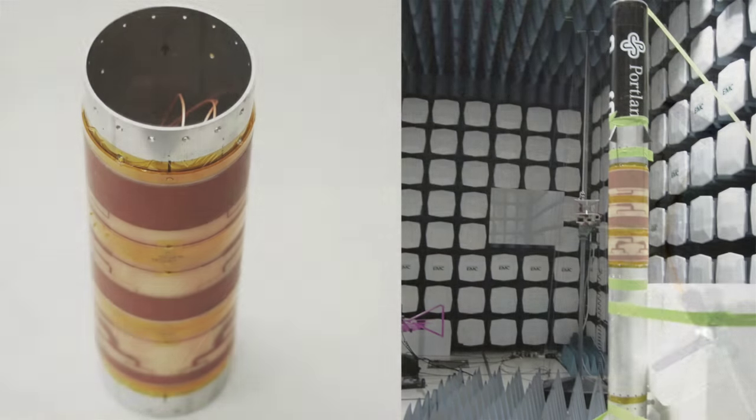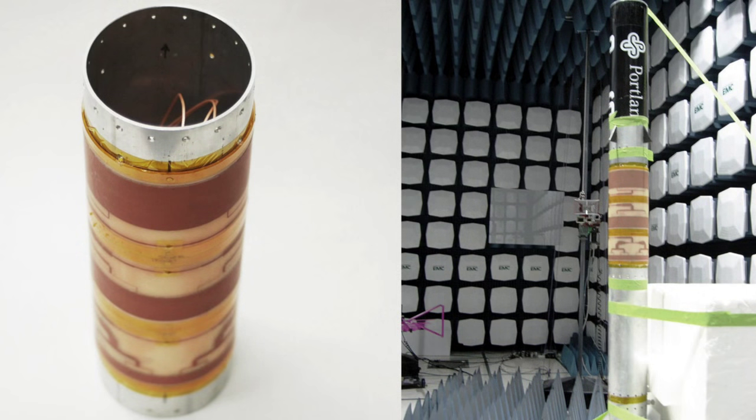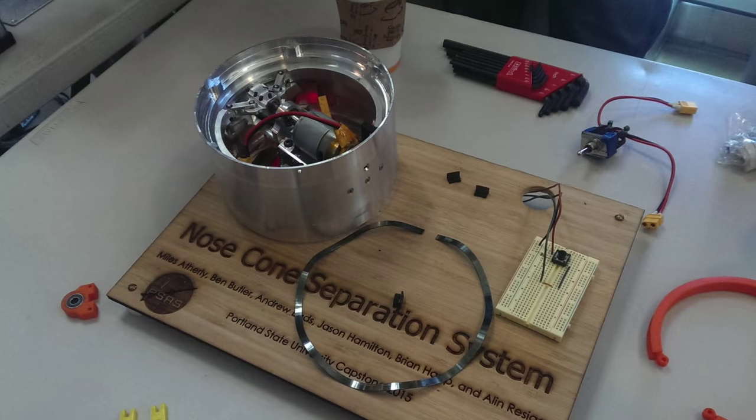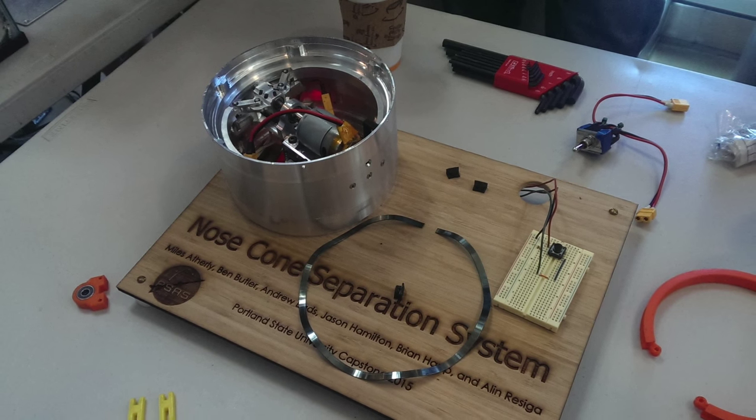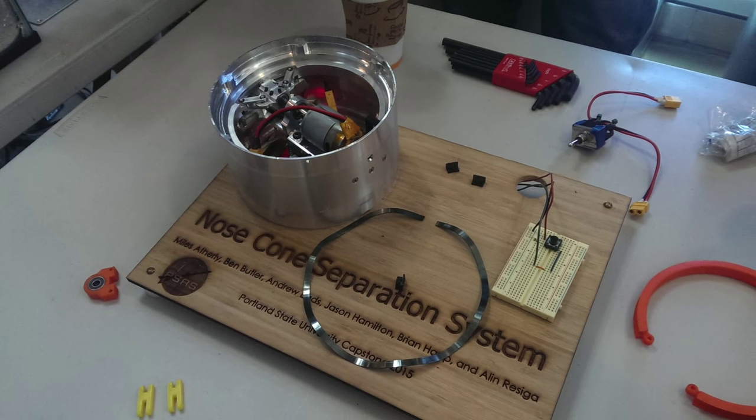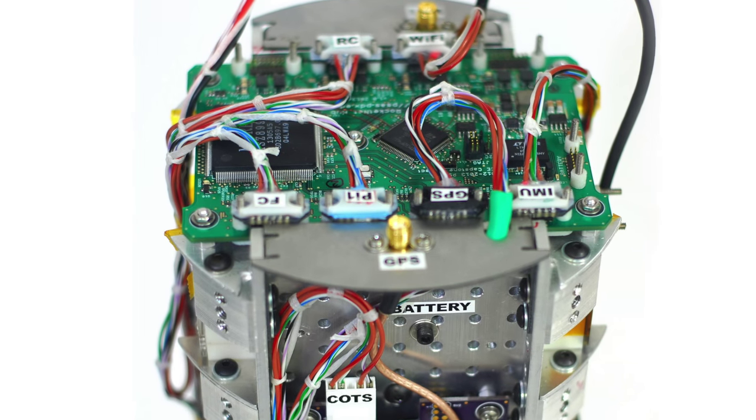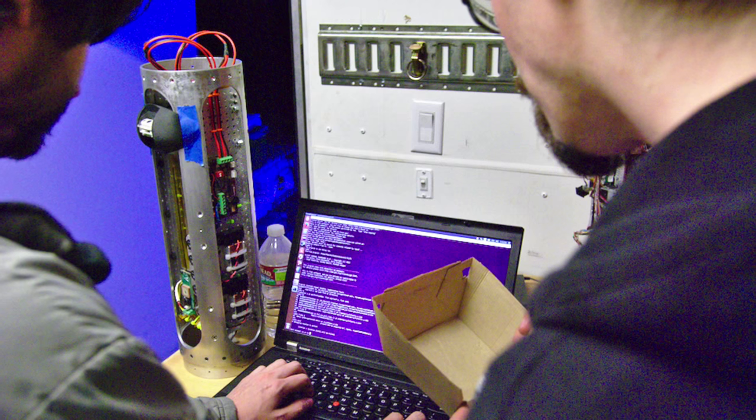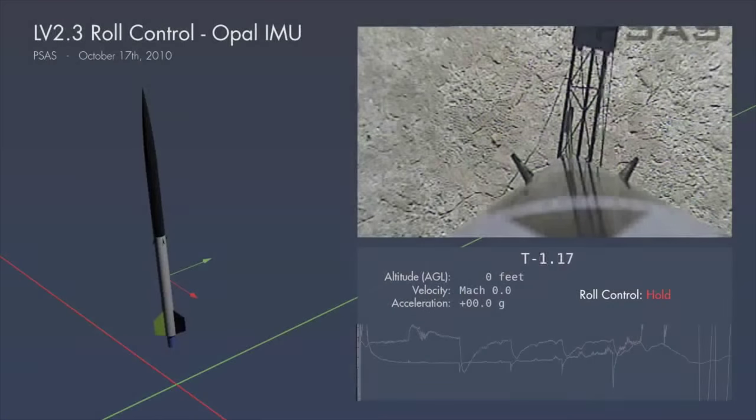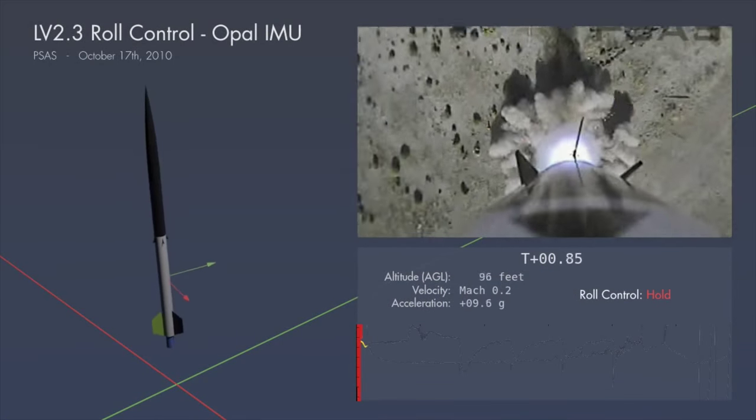As an Oregon-grown DIY space program with open-source ethos, we've pioneered open-source space technologies that are used by amateur rocketry groups around the world. We were the first to put Linux onboard amateur rockets, use long-distance Wi-Fi communications past Mach 1, and fly some of the very first control systems on amateur rockets.